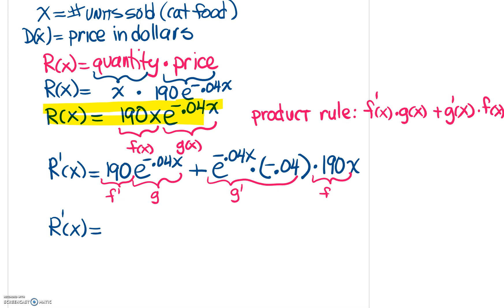So let me factor out where we have two terms here. Each term has a 190. So I'm going to take out a 190. And each term has the E to the negative 0.04 X. So I'm going to factor that out of each term. So what's going to be left for the first term? After I take that out from the first term, I just end up with one, plus when I take out the 190 and the E to the negative 0.04 X, what I'm left with is a negative 0.04 and the X.